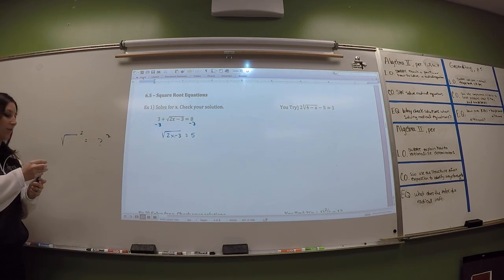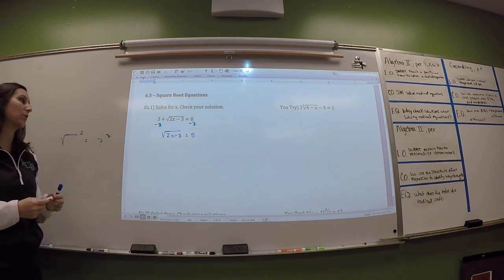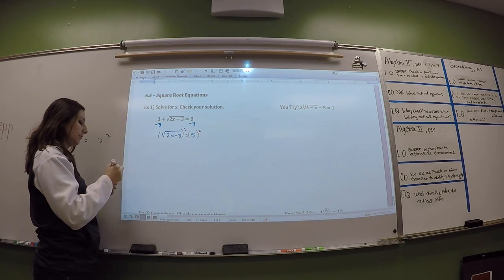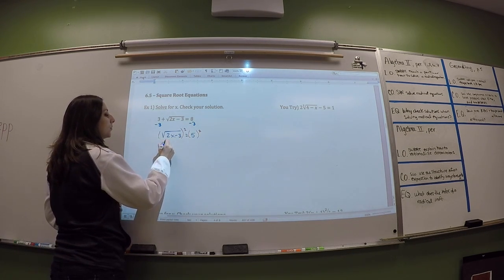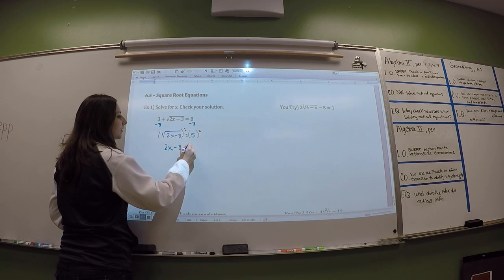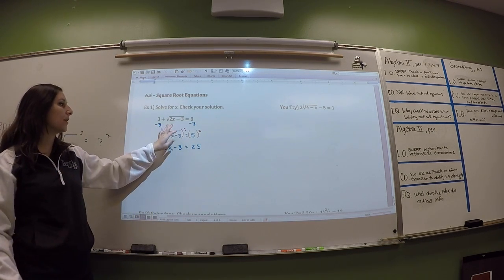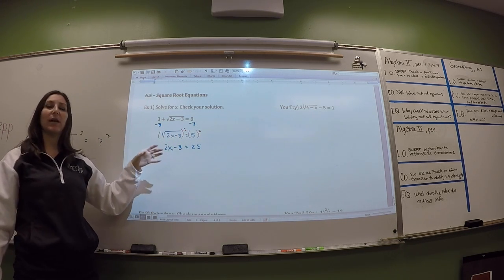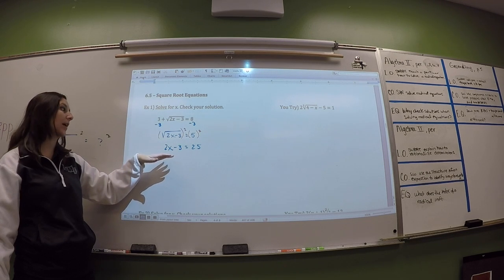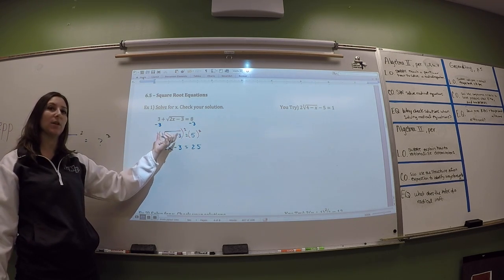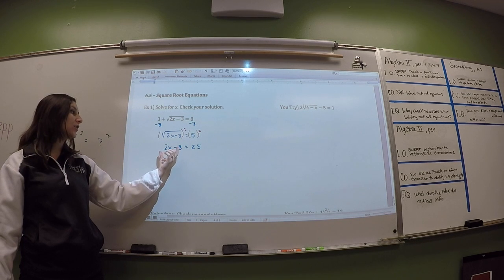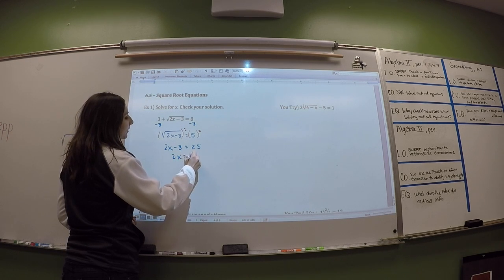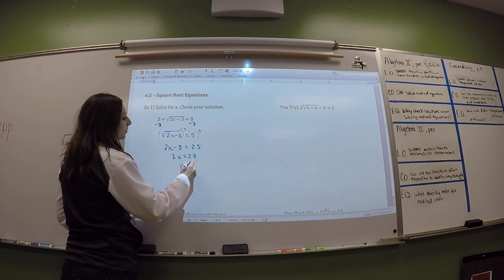So now the square root is by itself. So to undo the square root, we're going to square both sides. And we're doing that because if the square root of something is 5, then that means what's under the square root has to be 25. So we took what's under the radical and set it equal to 25. And that was all super easy. We just add 3 and divide by 2. And we're done.